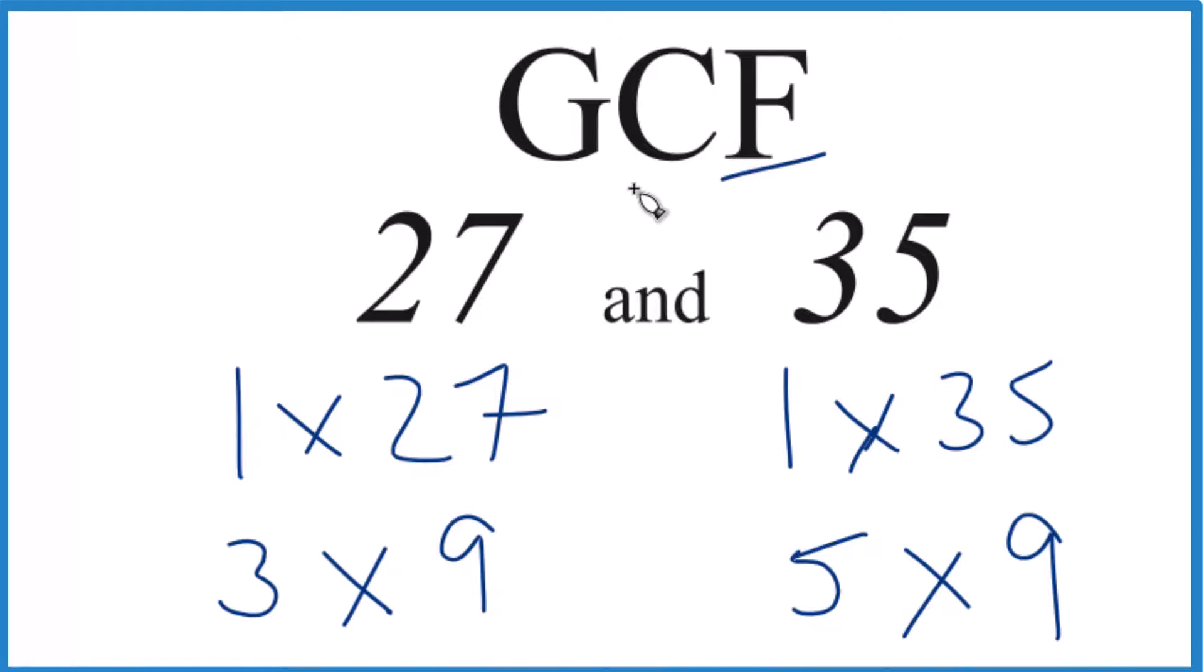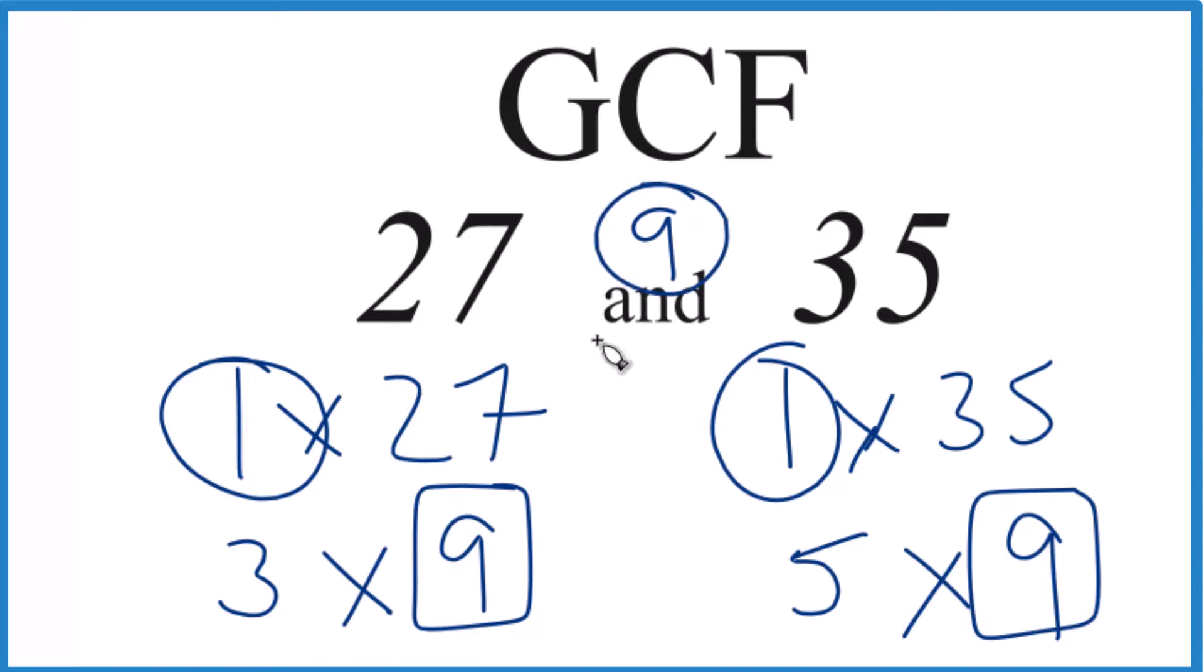So we have the factors. Let's look at what's in common and then choose the greatest one. So 1 is in common because 1 goes into 27 and 35 evenly. How about 9? That's on both sides here. And it looks like 9, that's the greatest common factor between 27 and 35.